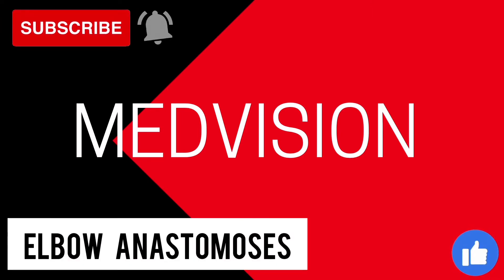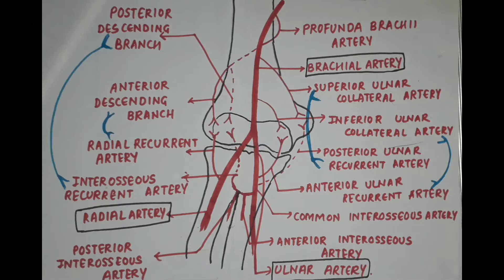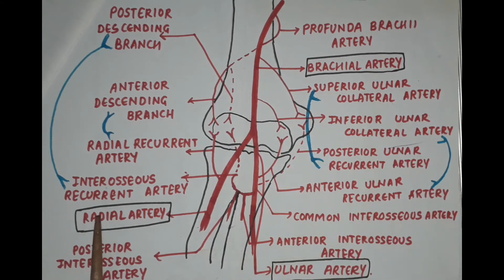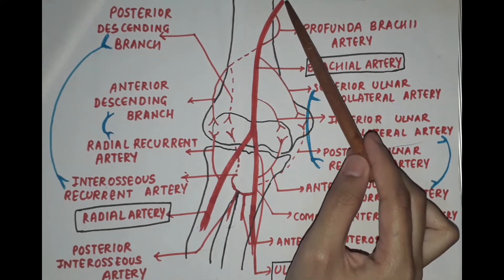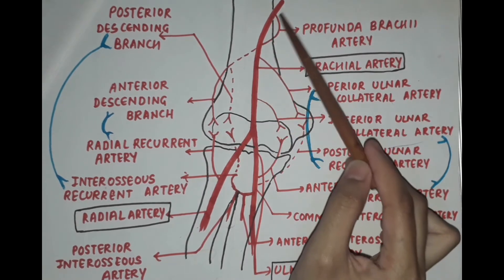Today's video is based upon the elbow anastomosis. The three main arteries that participate in the elbow anastomosis are the brachial artery, the radial artery, and the ulnar artery. The brachial artery is the continuation of the axillary artery.